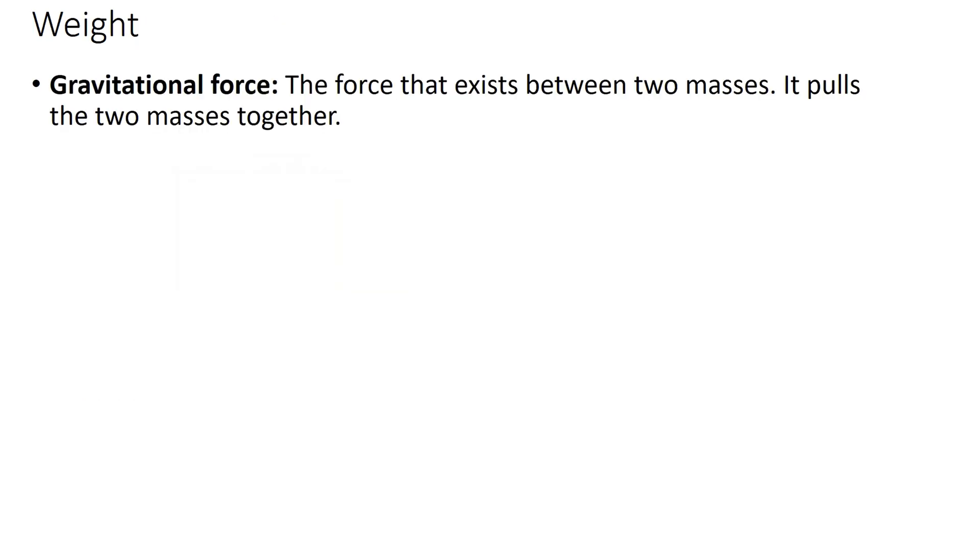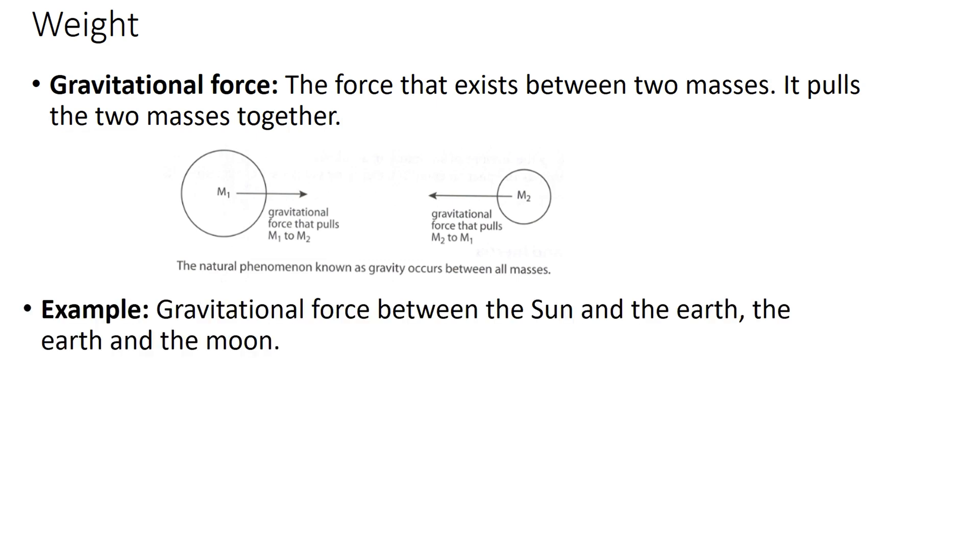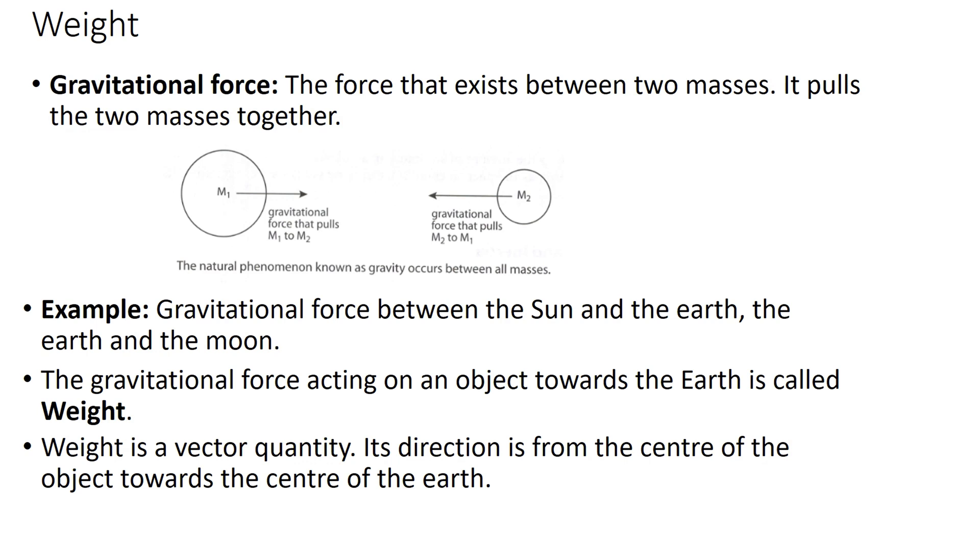Let's talk about weight. Gravitational force is the force that exists between two masses. It pulls the two masses together. This diagram illustrates the gravitational force. We have two masses here, M1 and M2. There is a gravitational force that pulls M1 to M2. At the same time, there is also a gravitational force that pulls M2 to M1. This natural phenomenon known as gravity occurs between all masses. For example, gravitational force between the sun and the earth and the earth and the moon. The gravitational force acting on an object towards the earth is called weight. Weight is a vector quantity. Its direction is from the center of the object towards the center of the earth. The SI unit for weight is Newton, symbol N.